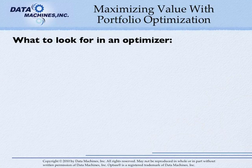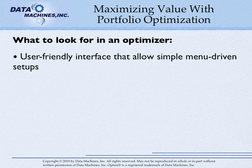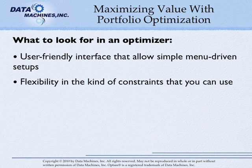And what should you look for in an optimizer? Look for optimizers that have user-friendly interfaces and allow simple menu-driven setups. Unless you have a strong propensity for doing mathematics, avoid optimizers that require you to set up your constraints in the language of linear programming. Look for flexibility in the kind of constraints that you can use — beyond just not-greater-than and not-less-than constraints. Average not-less-than and average not-greater-than constraints can be useful for attaining overall portfolio outcomes related to average time, risk, and reward constraints.